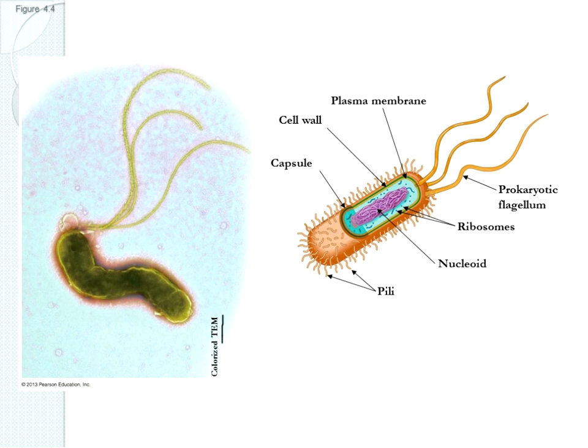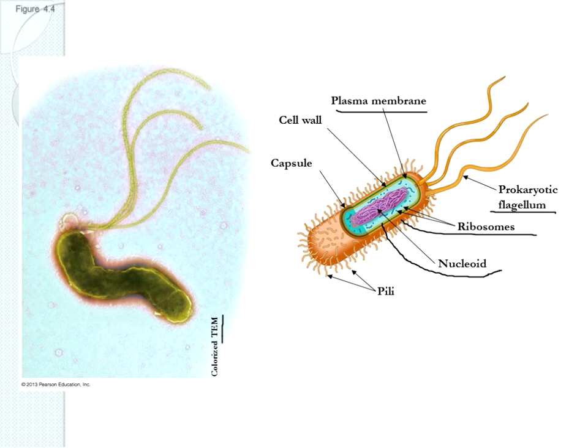Here's an image from your book. On the left they're showing a transmission electron micrograph magnified 26,000 times, and then an artist's rendition showing the parts. There's a plasma membrane, a nucleoid region where the chromosome is found, and some flagella to help this particular organism swim.